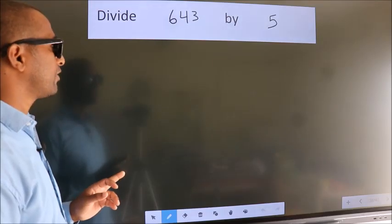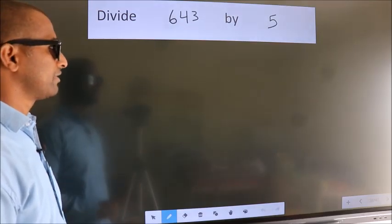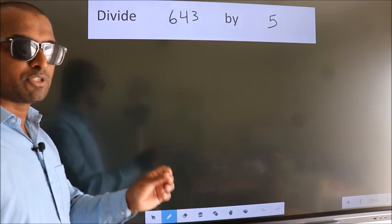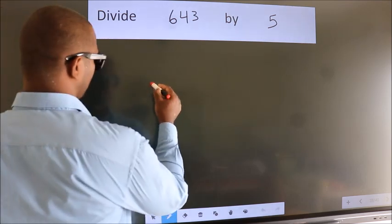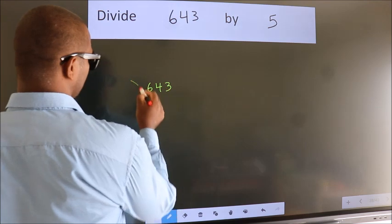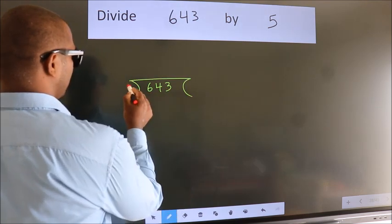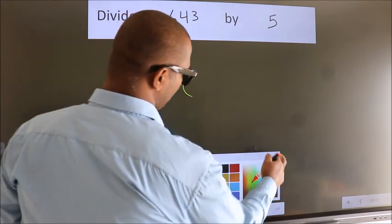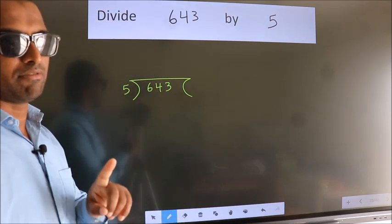Divide 643 by 5. To do this division, we should frame it in this way: 643 here, 5 here. This is your step 1.